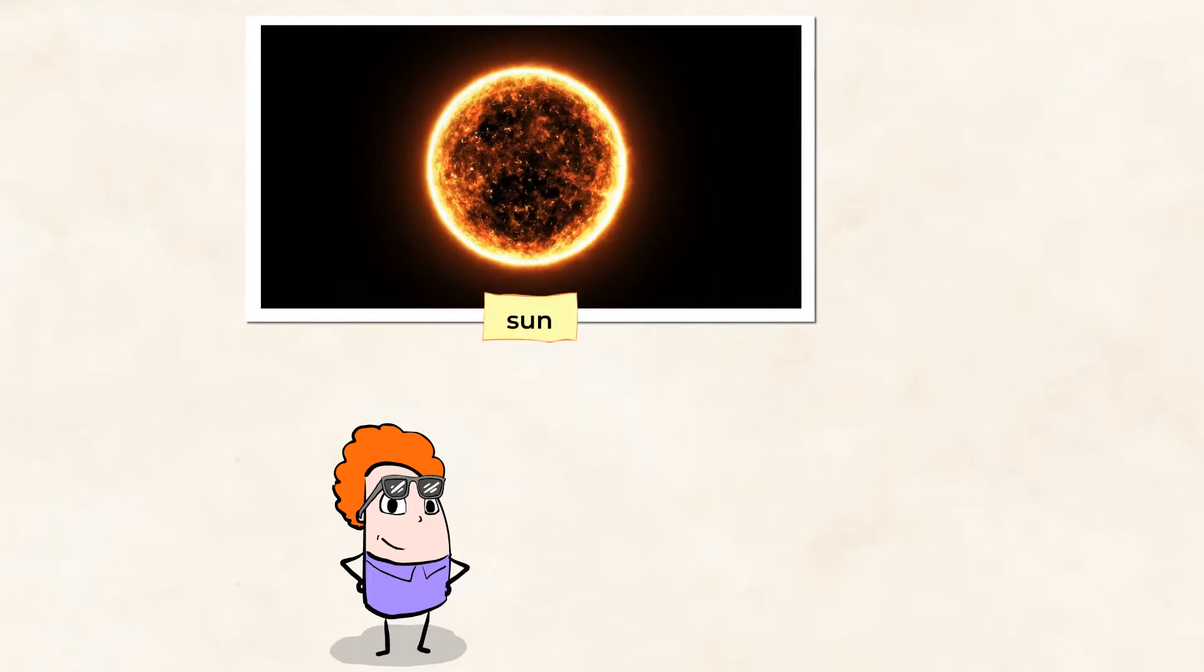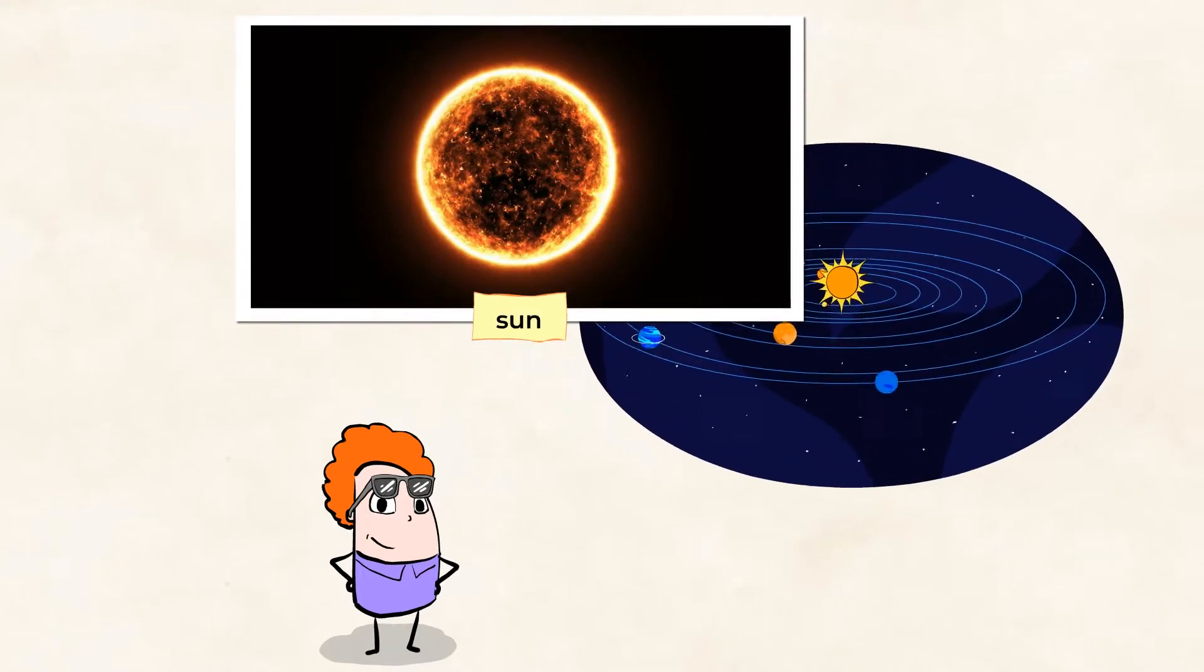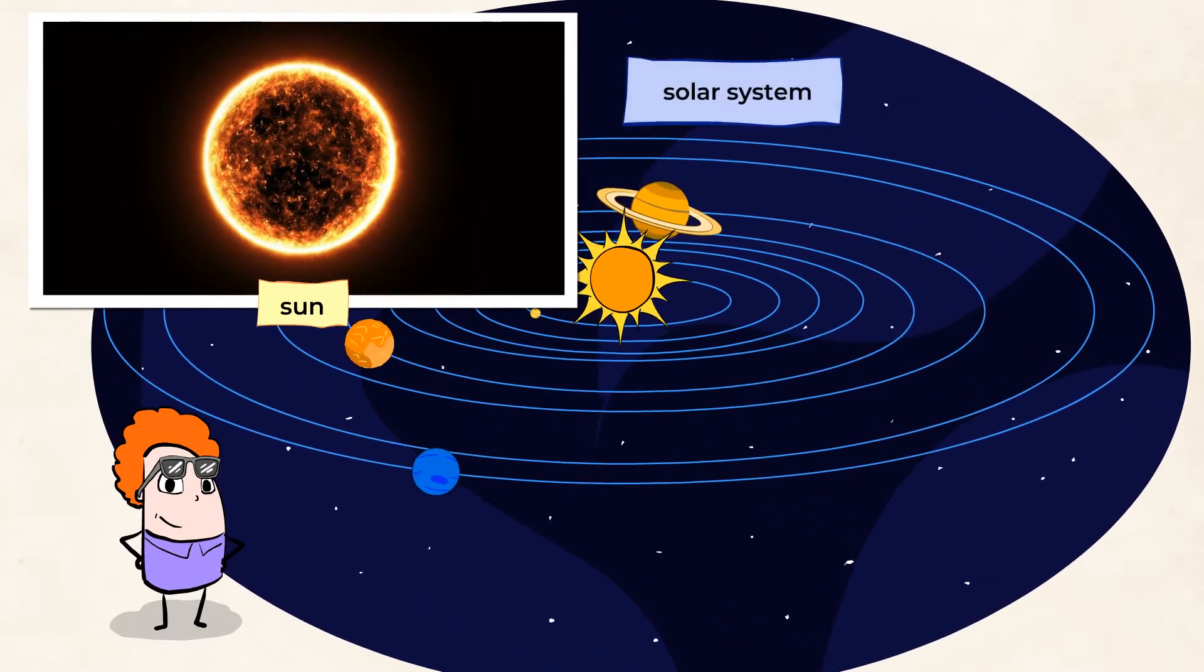Alright, so that is our mighty sun. It's the star at the center of our solar system. Oh, the solar system? That's the sun and everything that moves around it, including all the planets, comets, and asteroids.